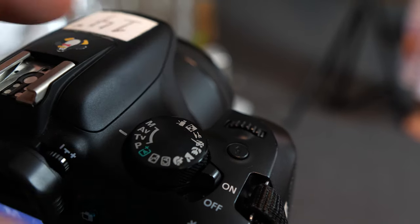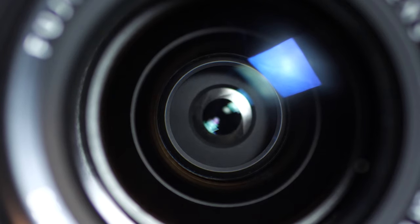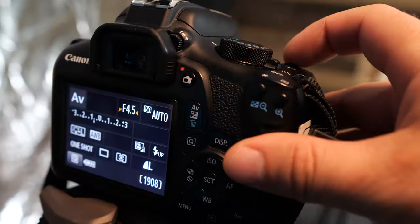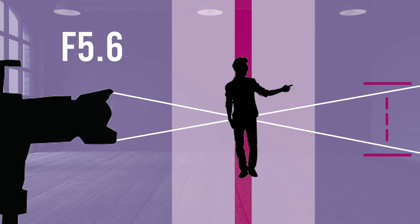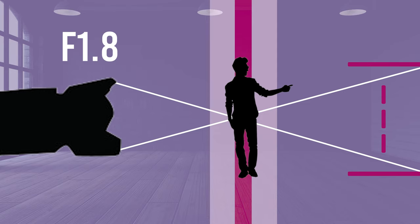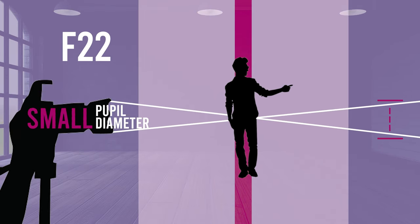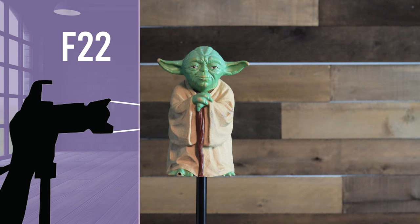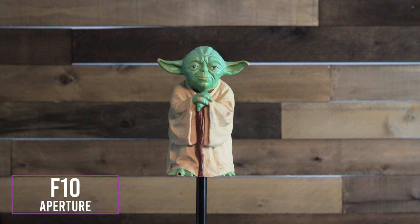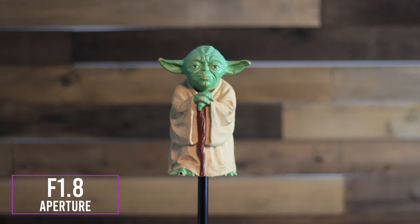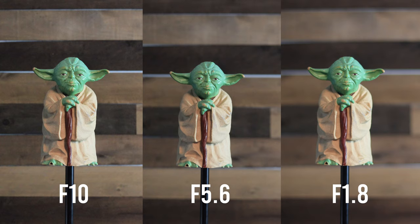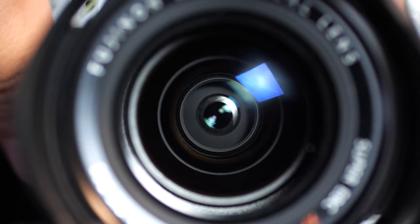The last, but surely not least, way to affect background blur is by adjusting your aperture. Aperture is the opening in the lens that allows light to reach the camera sensor, and is displayed on your camera in f-stops. The lower the number, the wider the aperture, or more importantly in this case, the wider the pupil diameter, which means a shallower depth of field. The higher the number, the smaller the aperture, or in this case, a smaller pupil diameter, which means a deeper depth of field. I took three shots: the first at f10, the second at f5.6, and the third at f1.8. When we compare them side by side, we notice that the lower the aperture, the blurrier the background. Just remember that your aperture is actually controlled by your lens and not your camera. So if you're wanting to get the blur that I got at f1.8 or even lower, then you're going to have to pony up for a faster lens that can go to a lower aperture.